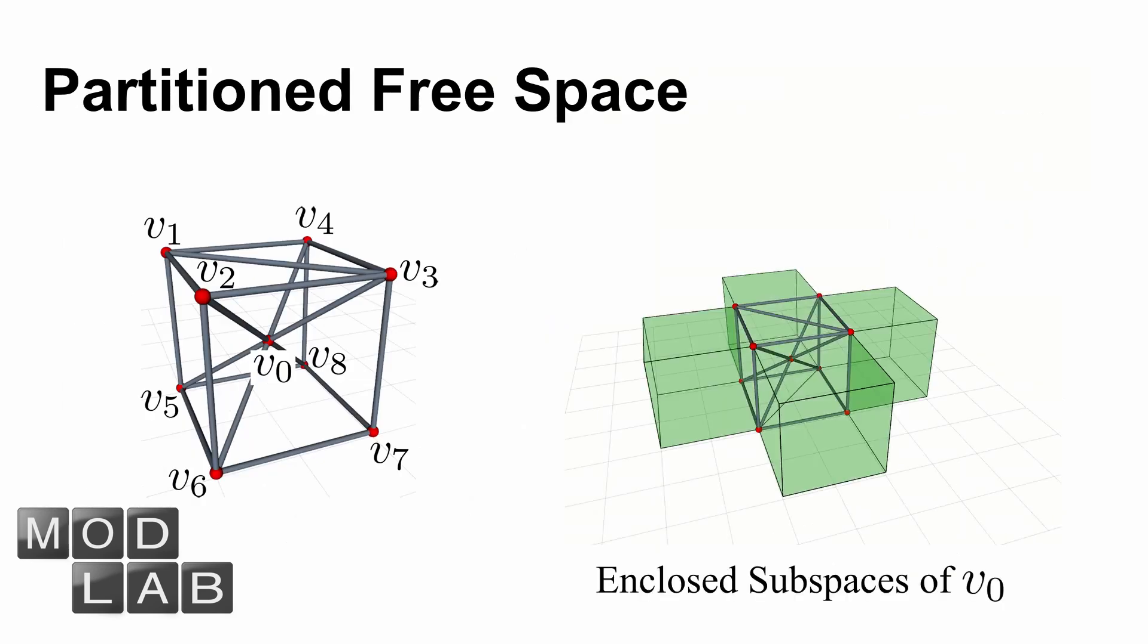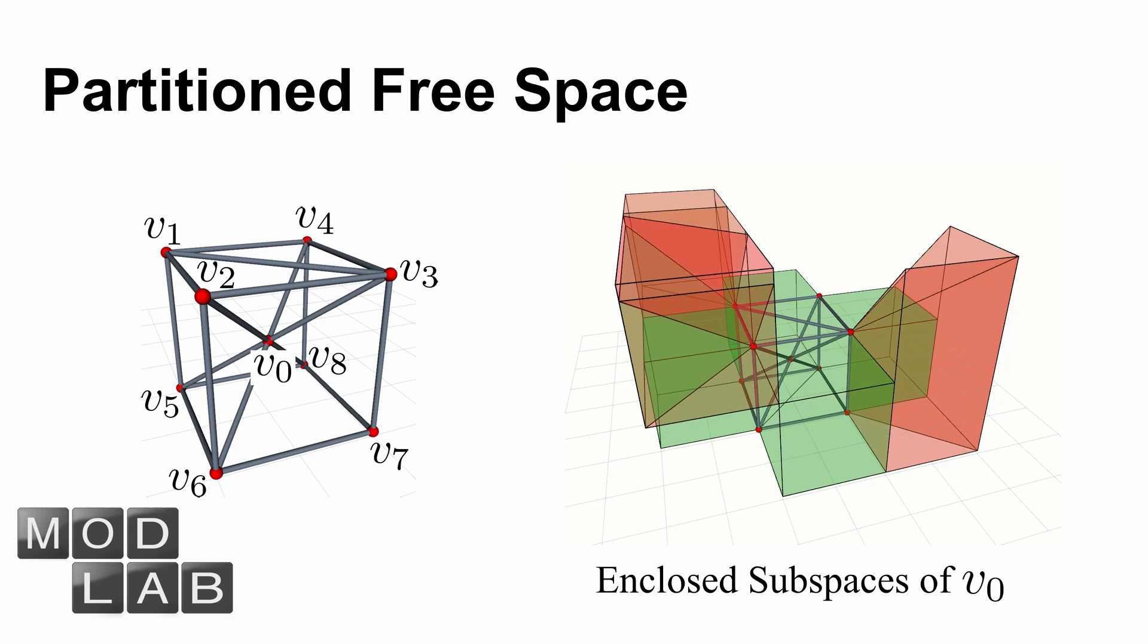The next part is the topology reconfiguration. The free space of a node is usually partitioned into multiple enclosed subspaces. If the node wants to go from one subspace to another one, then topology reconfiguration is required.